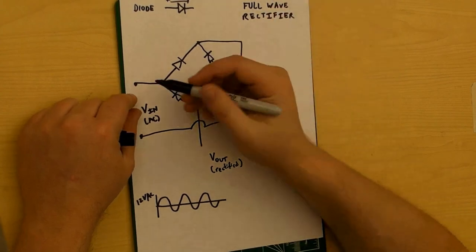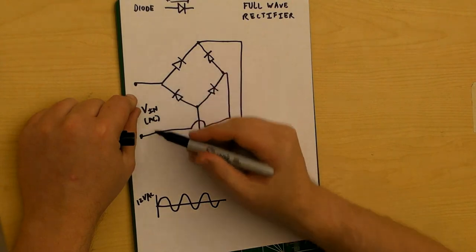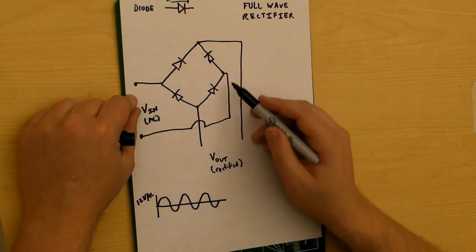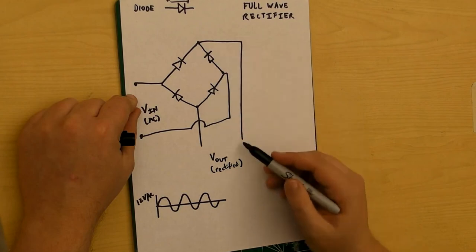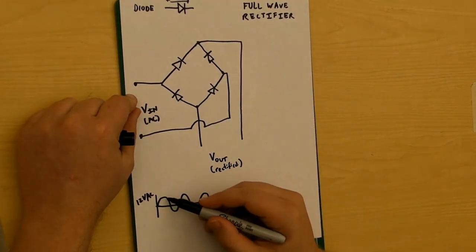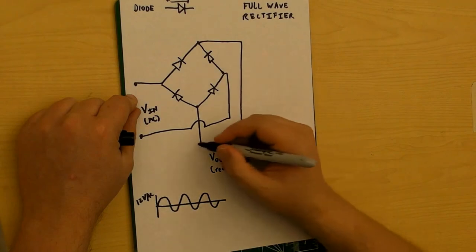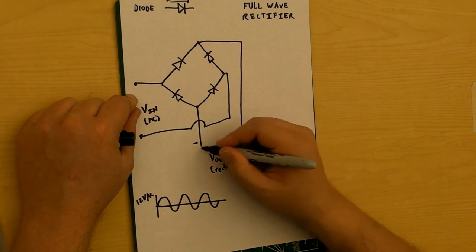So now let's do it the other way. Suppose that this terminal was negative. Well, in that case, this would be positive. It's going to flow this way and goes out to the same terminal. So this is positive both when it's on the positive side of the sweep and also positive on the negative side of the sweep.